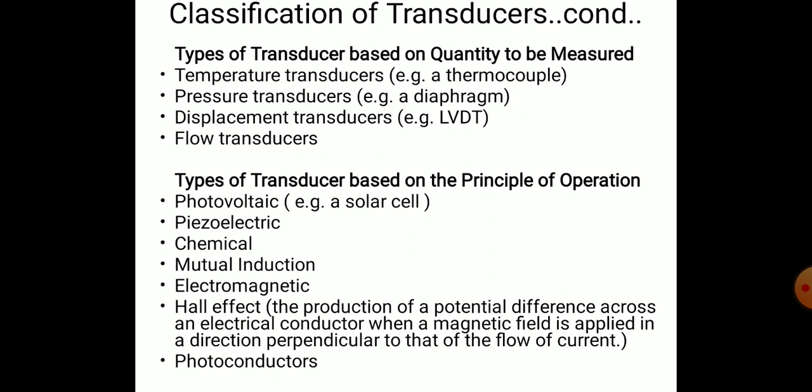Transducers can also be classified based on quantitative measurement. A temperature transducer — such as a thermocouple or thermistor — is used for temperature measurement. Pressure transducers include diaphragm-type devices. Displacement transducers measure linear movement — this is what LVDT, the Linear Variable Differential Transformer, does, which we will see later. Flow transducers are also used to convert flow into a measurable signal.